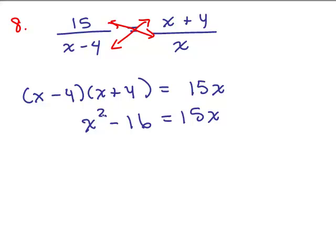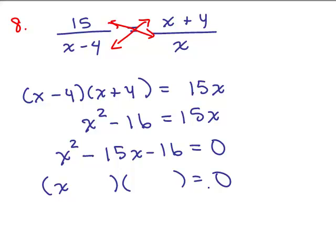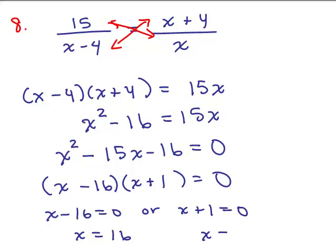And then I have a quadratic because I have the x squared. So I need to set the equation equal to zero by subtracting 15x from both sides. Finally, I factor. It's going to be 16 and 1, minus and plus, so that gives you the correct factors. You could do the factoring on scratch paper. So I have x minus 16 equals zero, or x plus 1 equals zero. So either x is 16 or x equals negative 1.